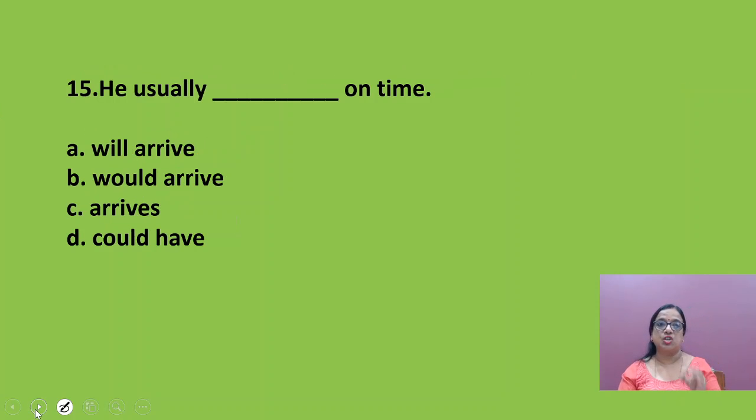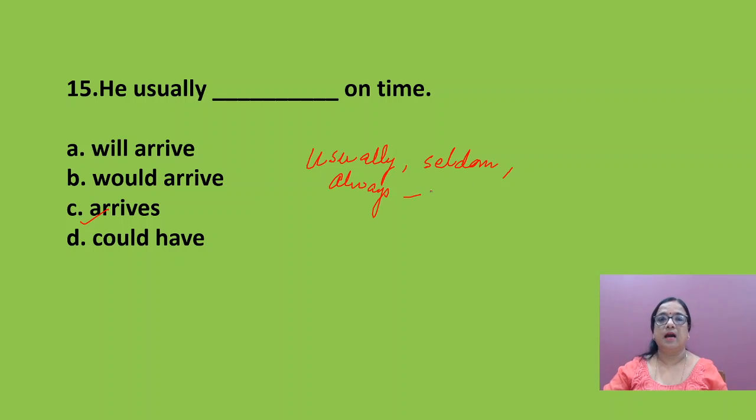He usually blank on time. After that, you have to put a present tense. He usually arrives on time. Now, learners, you must remember that after such verbs, usually, seldom, always, you always are putting simple present tense. There are many more: sometimes, never, all those. You are always putting simple present tense.